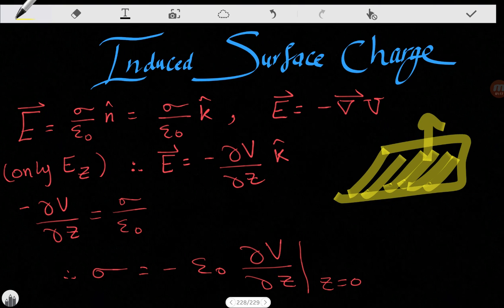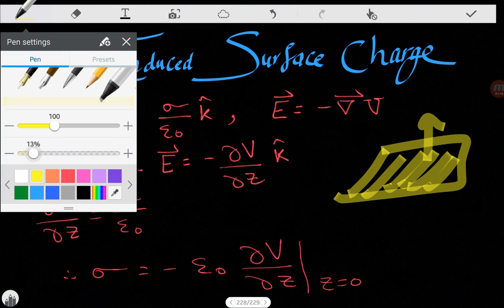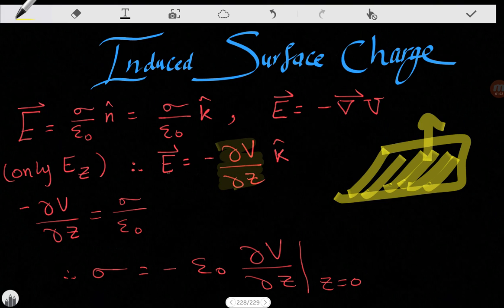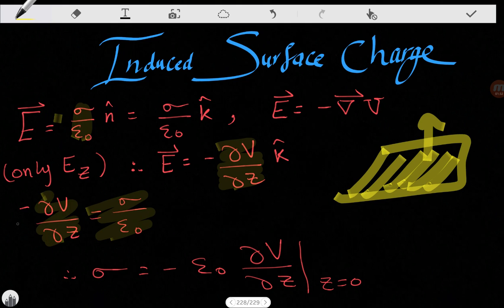...is equal to E, which is sigma over epsilon naught. So sigma over epsilon naught is equal to partial V over partial z with a negative sign.